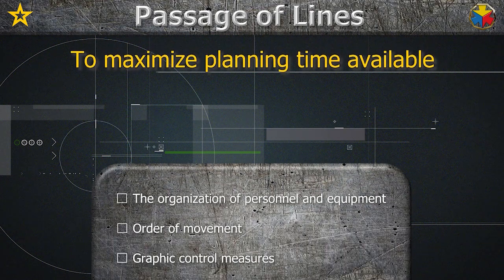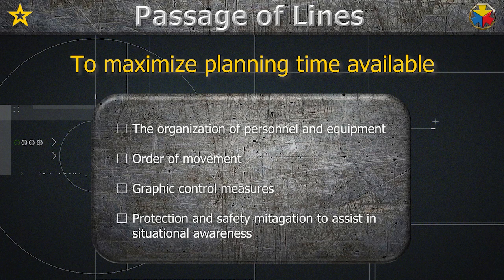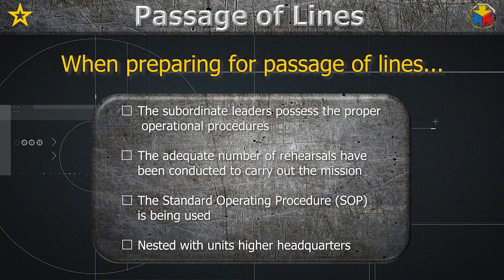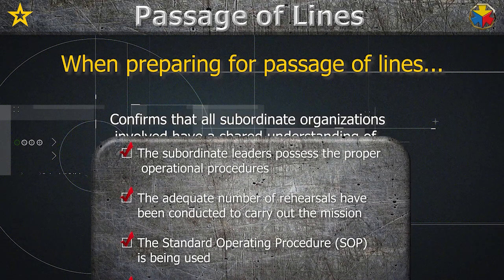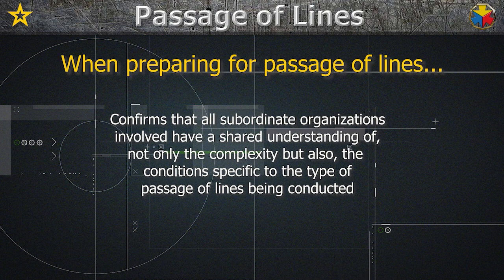To maximize whatever planning time is available, the following actions must be considered: one, the organization of personnel and equipment; two, order of movement; three, graphic control measures; and four, protection and safety mitigation to assist in everyone's situational awareness. When preparing to conduct a passage of lines, the Sergeant Major ensures the subordinate leaders possess the proper standard operating procedures and that an adequate number of rehearsals have been conducted to carry out the mission. He ensures the SOP being used is nested with the unit's higher headquarters, confirming that all subordinate organizations involved have a shared understanding of not only the complexity, but also the conditions specific to the type of passage of lines being conducted.